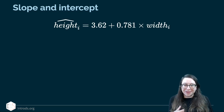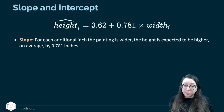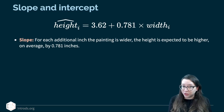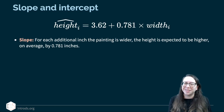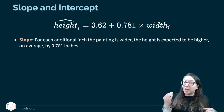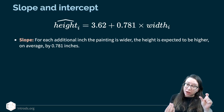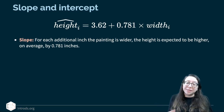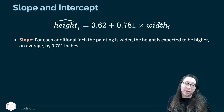So what do I do with these numbers? How do I interpret them? The interpretation of the slope is that for each additional inch the painting is wider, the height is expected to be higher on average by 0.781 inches. I'm using intentionally careful language here — not 'if you increase the width, this is what will happen to height,' but rather that as width increases, we expect height to increase as well, on average, by 0.781 inches for every inch the painting is wider.